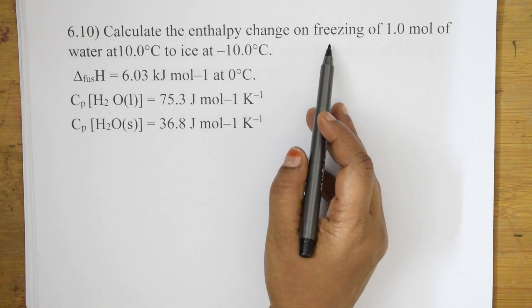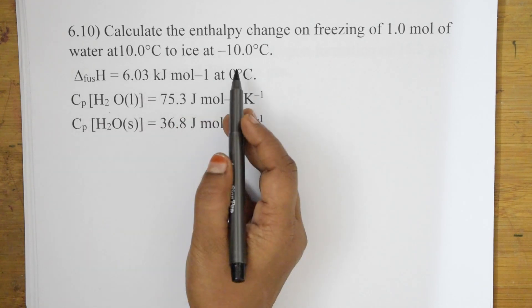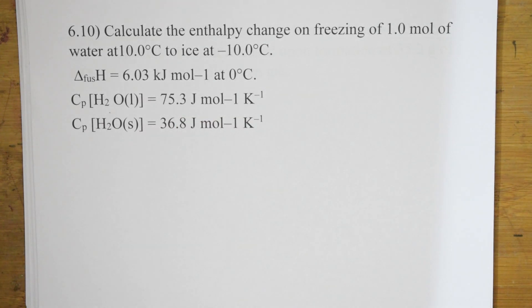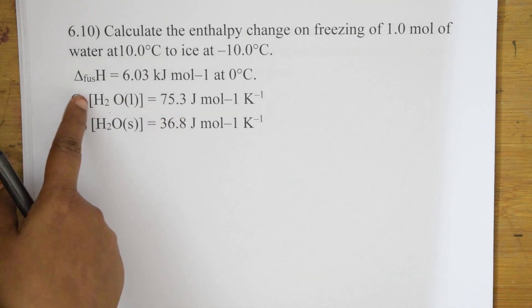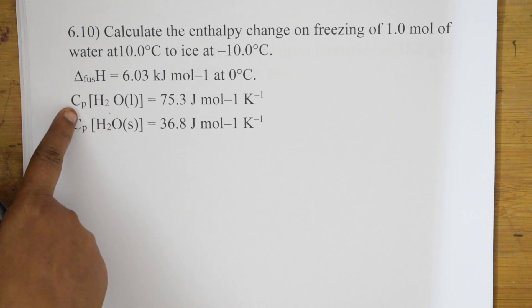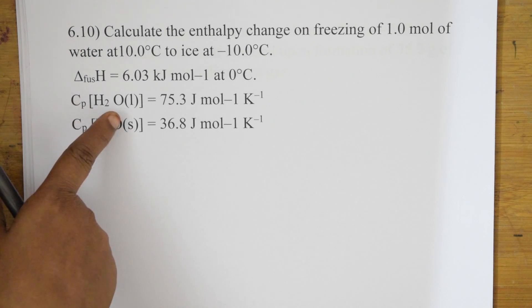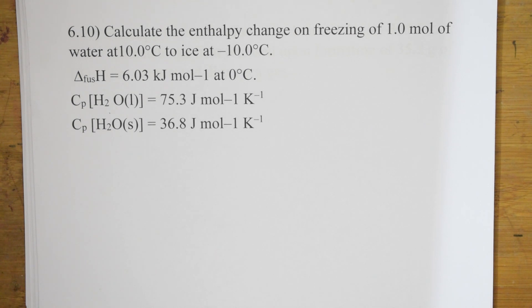Question 6.10: Calculate the enthalpy change on freezing one mole of water at 10°C to ice at −10°C. Given: ΔH of fusion, Cp for liquid water, and Cp for solid water (ice) are all provided. We need to calculate ΔH total.